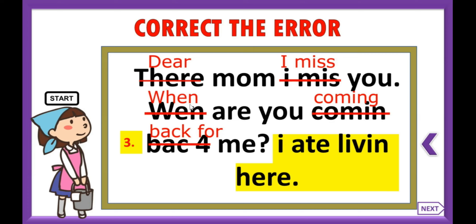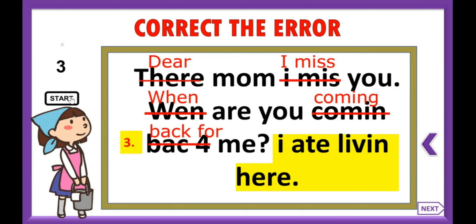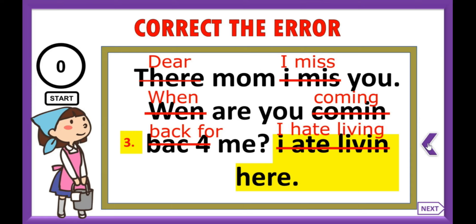Let's move on to sentence number three: 'I hate living here.' Did you find the errors? The letter I should be capitalized. 'Hate' should be spelled H-A-T-E, and remember 'living' contains a G. How well did you do? Don't be too hard on yourself because you have more sentences to correct.